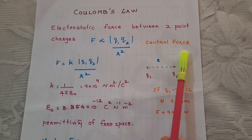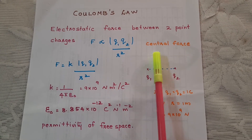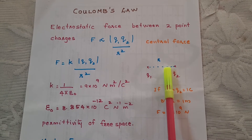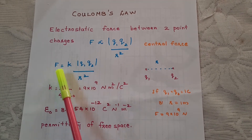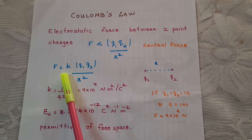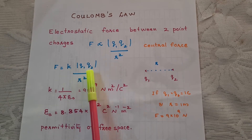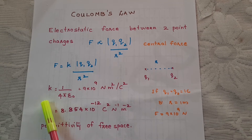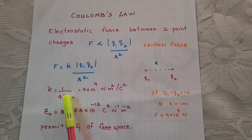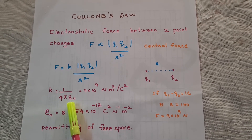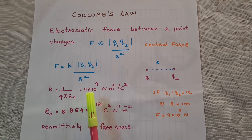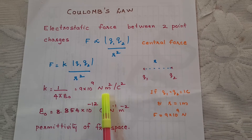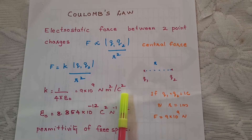It is a central force as it acts along the line joining the two charges. So F is equal to a constant into modulus Q1 Q2 by R square. The constant k is equal to 1 by 4 pi epsilon 0, which is equal to 9 into 10 raised to 9 newton meter square per coulomb square.